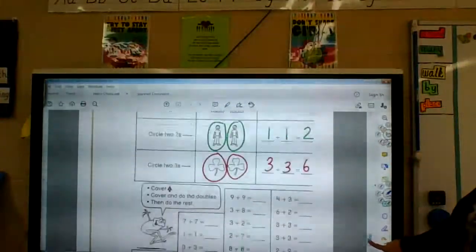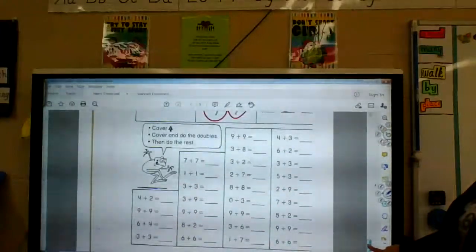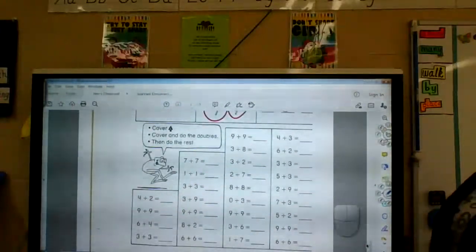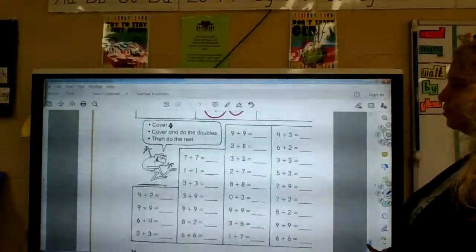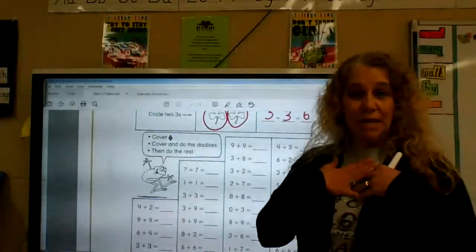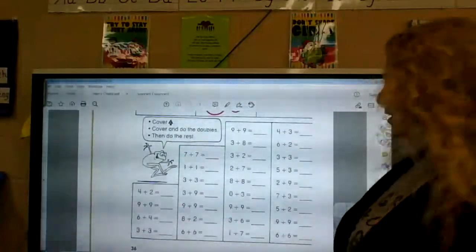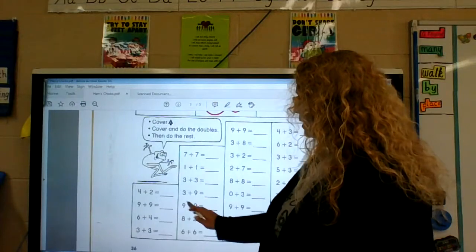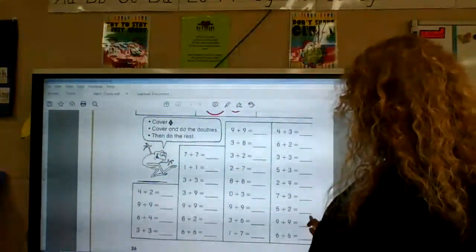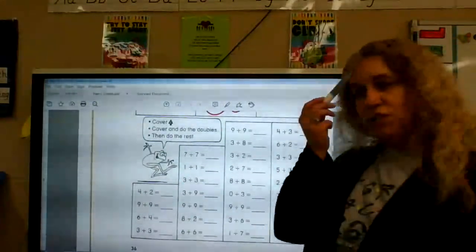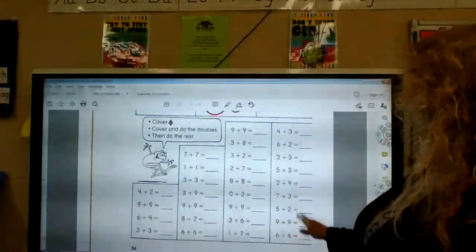All right. Nine plus nine is 18. Okay. So, for the bottom, it says cover the top. So, if you can, try not to look at the top. And do the doubles, then do the rest. So, this time, it says do the doubles, then do the rest. Okay. If it was me doing this, I would look for those nine plus nines first because they're kind of the hard one, right? And I would go through and find those and put my 18 because they're my hard ones.